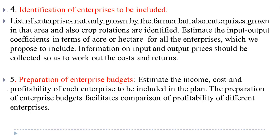Step 4 is the identification of enterprises to be included. List not only the enterprises grown by the farmer but also those grown in the area; crop rotations should also be identified. Estimate the input-output coefficients per acre or hectare, and collect information on input and output prices.